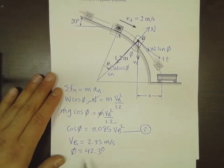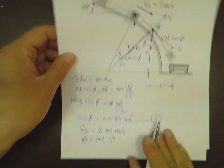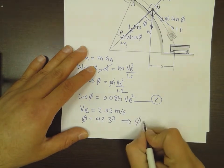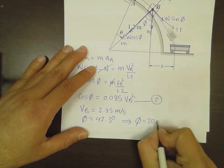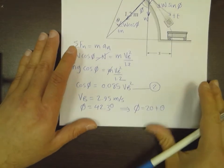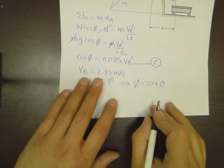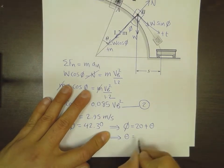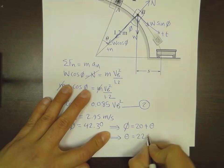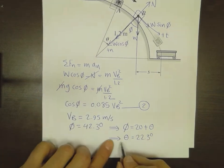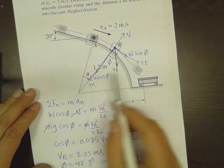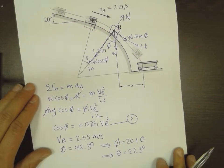From the relationship between phi and theta, where phi equals 20 plus theta, this directly gives theta equal to 22.3 degrees. This is the angle theta that we were asked to find.